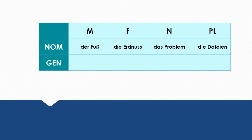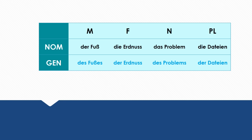Weiter geht's! Next set: 'der Fuß' (the foot), 'die Erdnuss' (the peanut), 'das Problem' (the problem), 'die Dateien' (the files). The genitive forms are: 'des Fußes' (of the foot), 'der Erdnuss' (of the peanut), 'des Problems' (of the problem), 'der Dateien' (of the files).